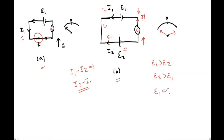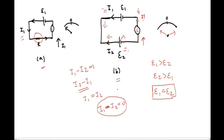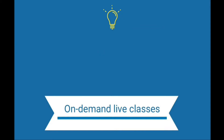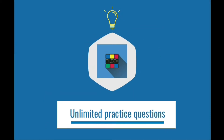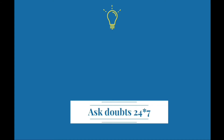Now, what happens when E1 equals E2? In this case, no current will pass through the galvanometer, because since E1 equals E2, the same current I1 will equal I2, hence I1 minus I2 equals zero. So no current will flow through this galvanometer. This is the concept that we have used to devise the potentiometer.